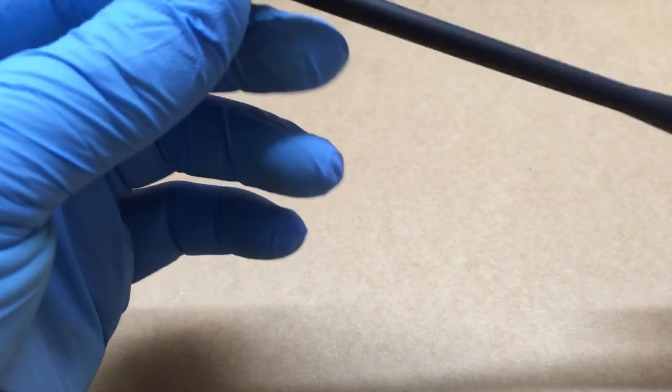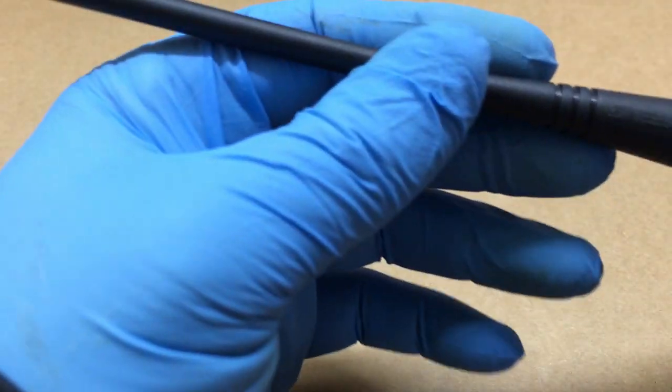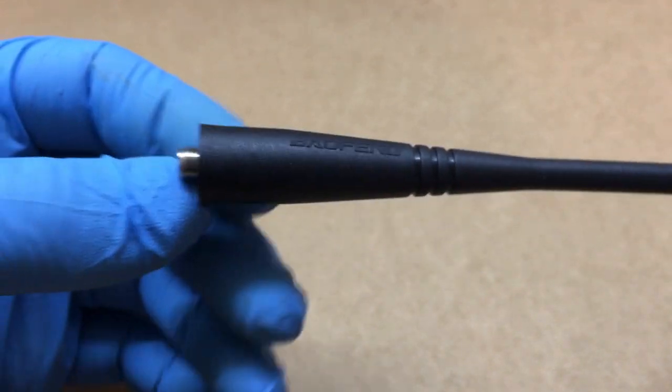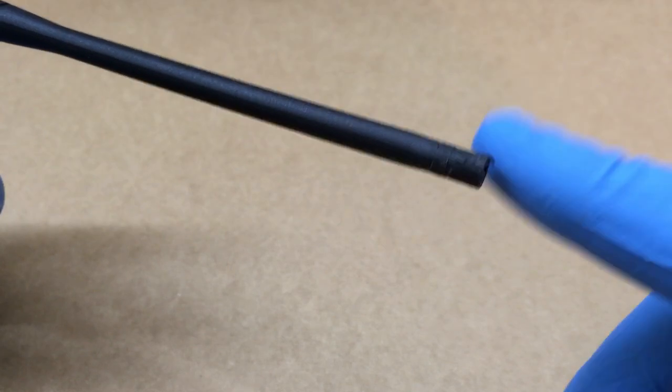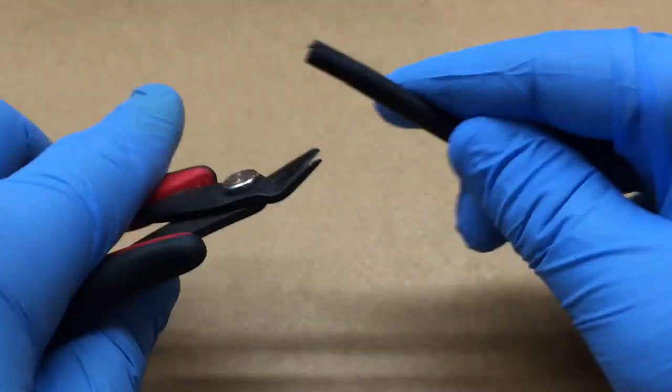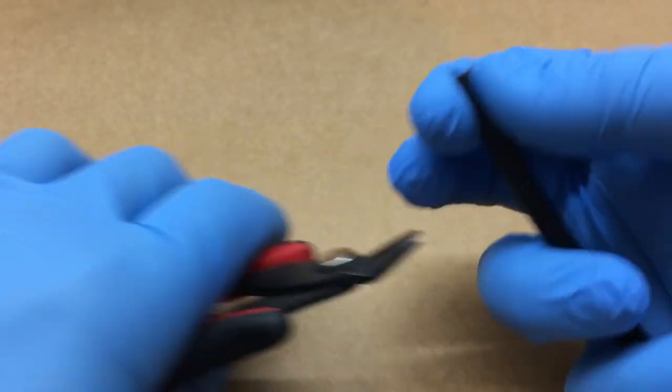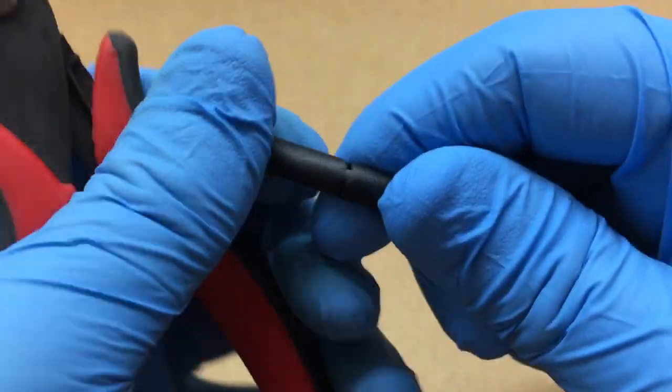Alright, First Pie Guy here. I have this stock Baofeng antenna here off of a UV-5R. I went ahead and already broke off the top of it. I want to see what's inside this thing, so let's see what's going on. Well, I see something right there.